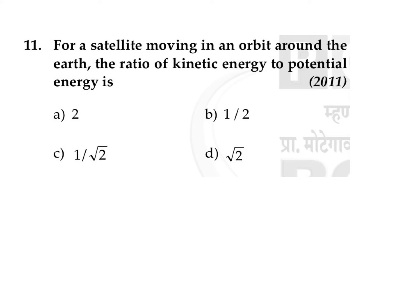For a satellite moving in an orbit around the earth, the ratio of kinetic energy to potential energy is — you can write the ratio of kinetic energy to potential energy. The value of kinetic energy is plus GMm divided by 2r₀, and potential energy is minus GMm divided by r₀.